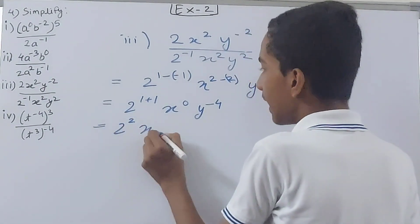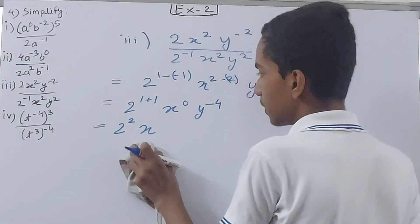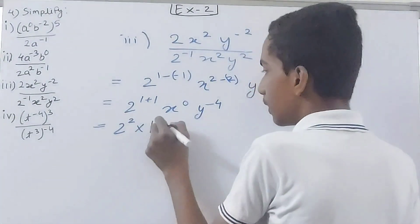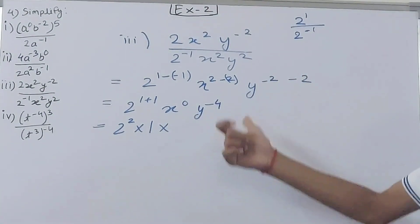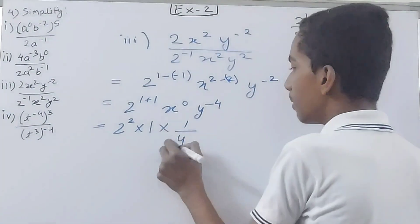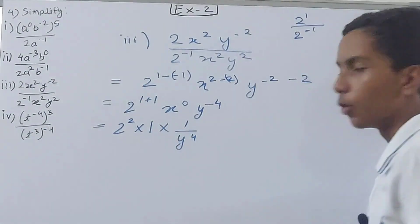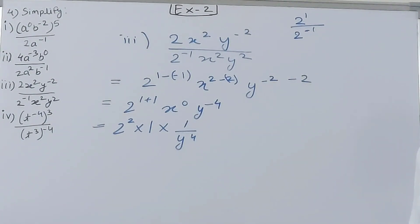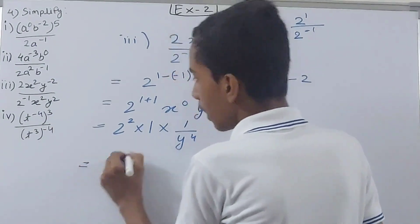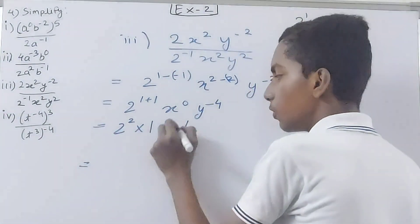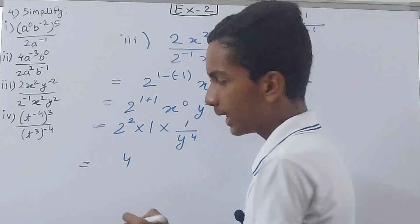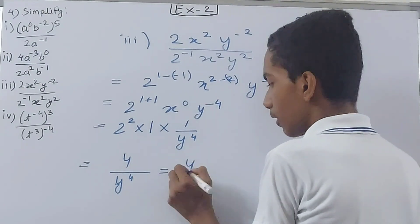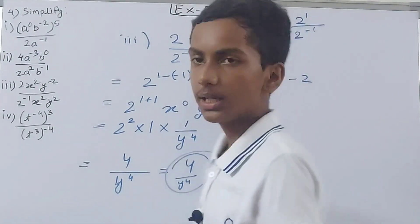Now 2 to the power 2 is 4. x to the power 0 becomes 1. y to the power minus 4 I will write as 1 by y to the power 4, because in simplest form we cannot write negative exponents. So 4 into 1 into 1 by y⁴ gives us 4 upon y to the power 4. That is our answer.